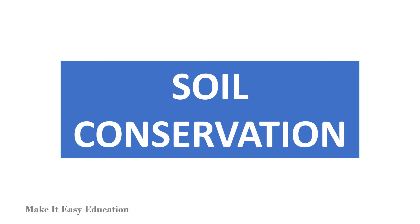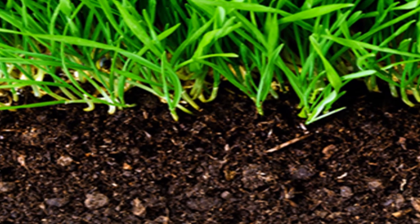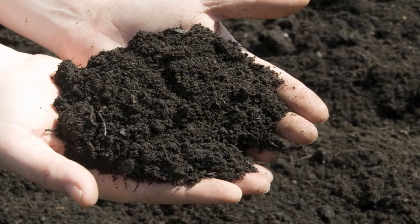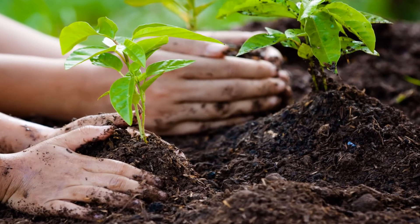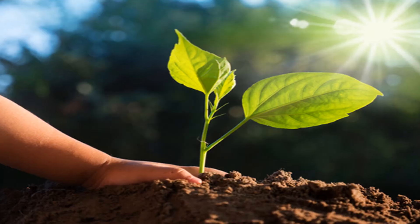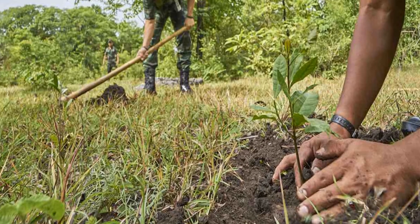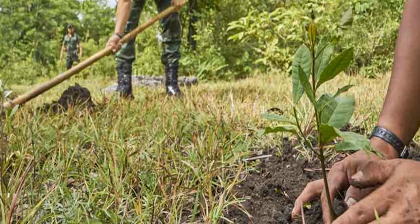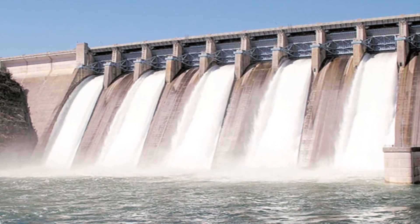Soil conservation. Plants get most of their nutrients from the topsoil. Protection of soil from erosion is known as soil conservation. Plant more trees to replace the ones that are cut down. Trees and bushes should be planted in open lands — this does not allow the wind to take away the topsoil. Dams should be built across rivers to prevent floods, as flowing water can easily wash away a lot of topsoil.